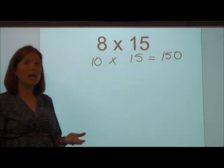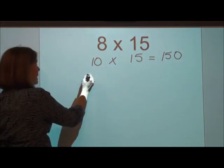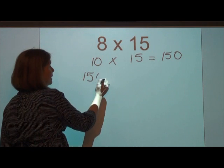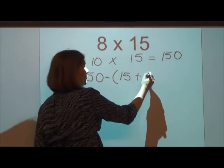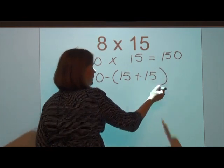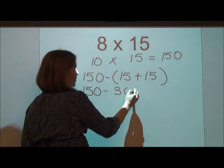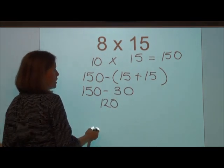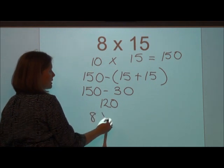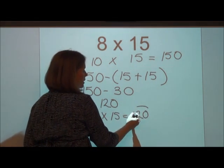But again, this time I added 2 groups of 15. So I need to take those 2 groups of 15 away. Here's one group of 15 and my second group of 15. That's going to get me 150 minus 30, which is going to give me 120. So 8 times 15 is going to have a product of 120.